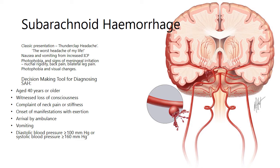There may also be some visual changes. I've included a decision-making tool for clinical diagnosis of subarachnoid hemorrhage, which, on top of the thunderclap headache, considers whether the patient is age 40 or older, whether there is a witnessed loss of consciousness, whether they are complaining of neck pain or stiffness, whether they are likely to vomit, and whether they attend with a diastolic blood pressure of more than 100 mmHg and a systolic pressure of more than 160 mmHg.